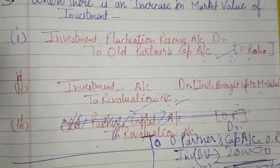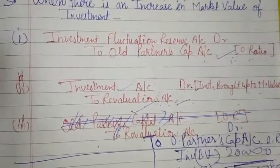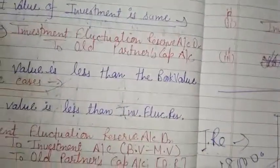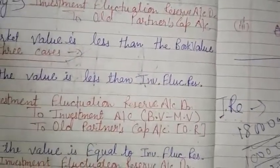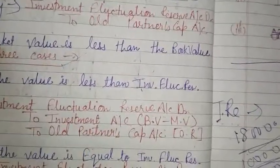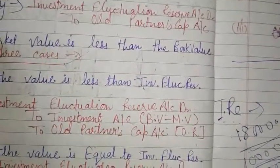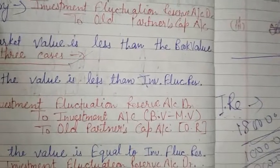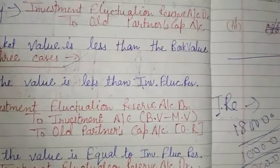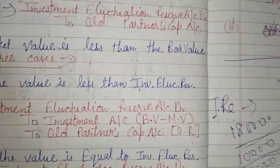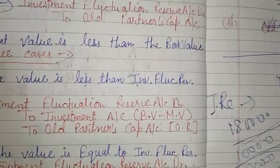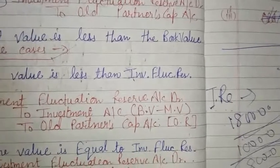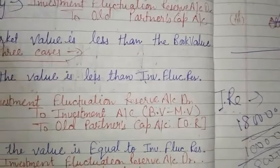I hope all students have understood the entries related to Investment Fluctuation Reserve. In the next lecture, I will explain a numerical example regarding this type of adjustment. Thank you.